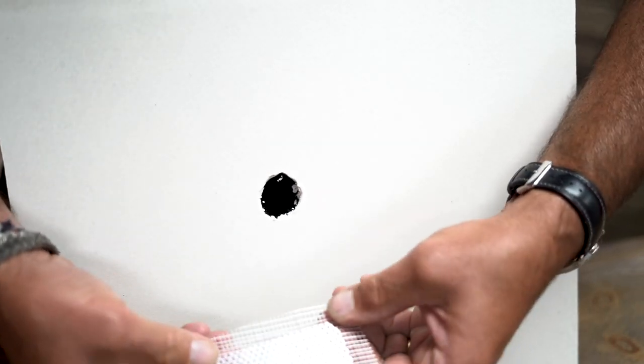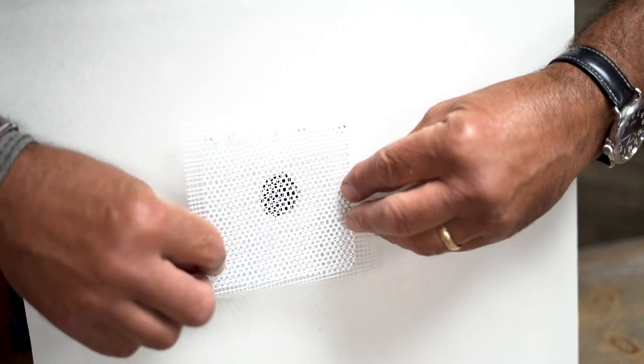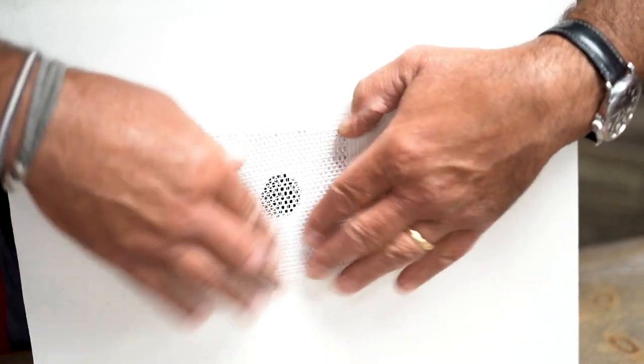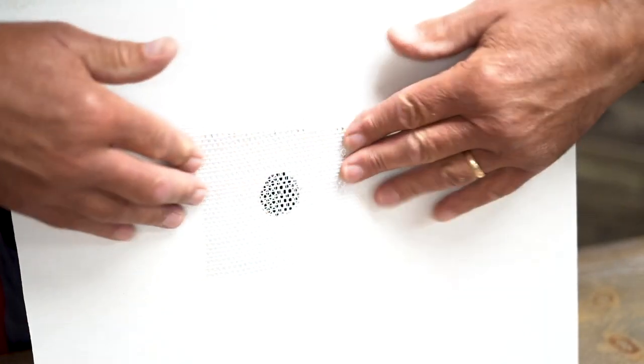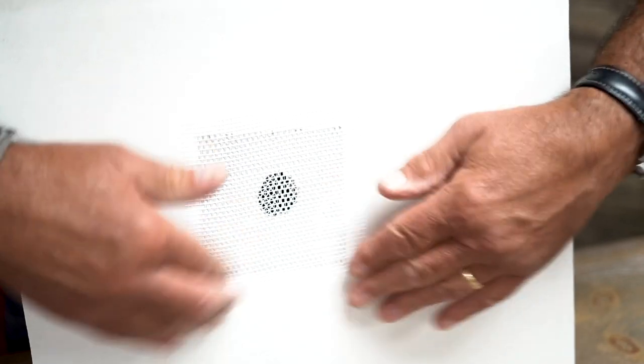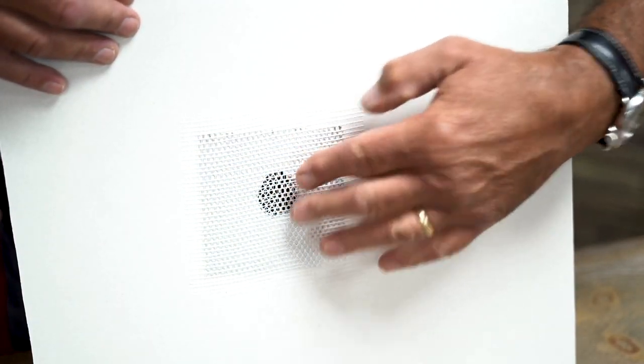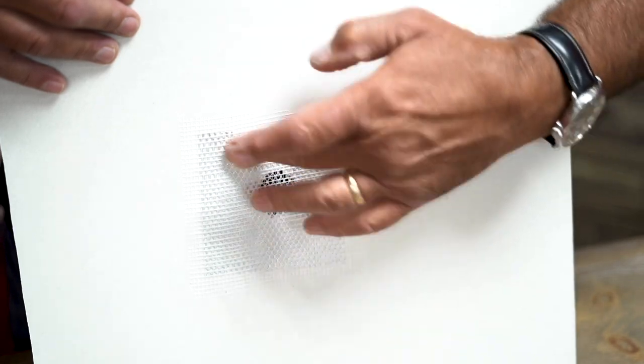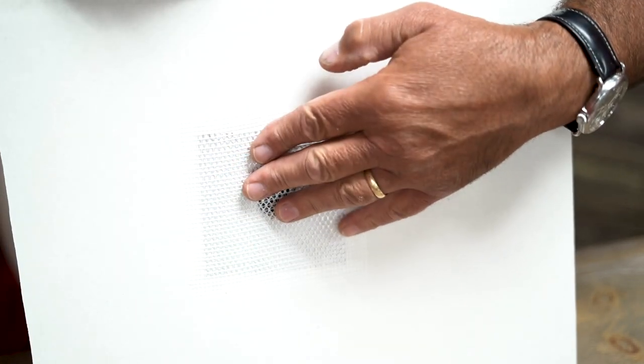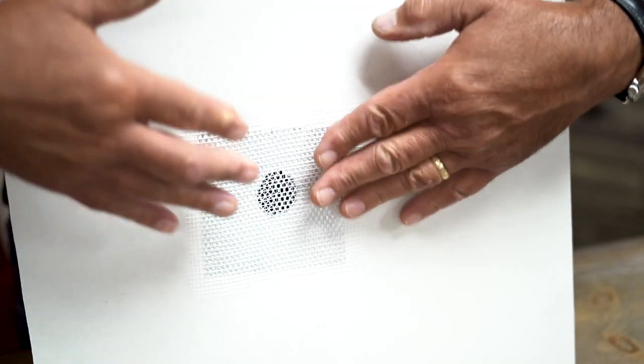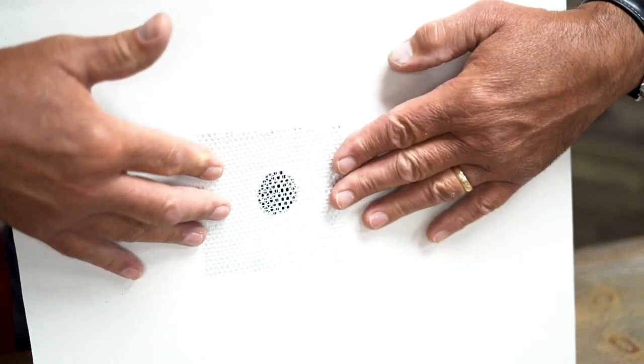And so you're going to open that up and then center it over the hole and just press it in place. The fiberglass mesh around there has adhesive as well as the metal. This gives you some rigidity so that when you add the spackle or joint compound, depending on what you're using, it won't sink in and it'll hold it in place.